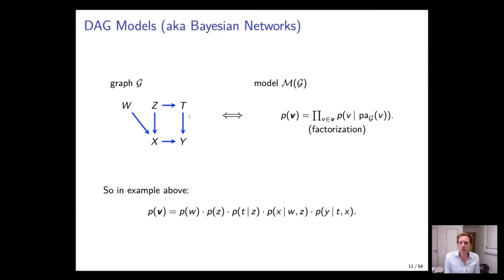How do we associate a statistical model with a DAG? We take a joint distribution over the variables and say a distribution is in the model if we can write it as a product over each variable conditional just on its parents in the graph. For example, W has no parents so we get its marginal distribution; Z also has no parents; T has parent Z so we get the conditional distribution of T given Z, and so on. The graph is a compact way of representing all distributions of this form.